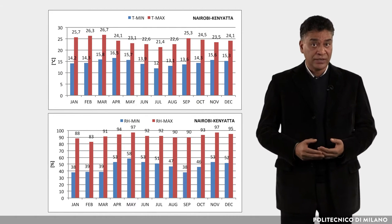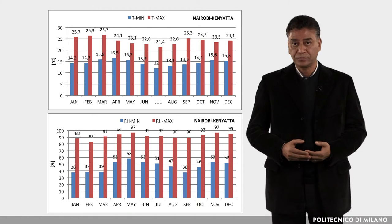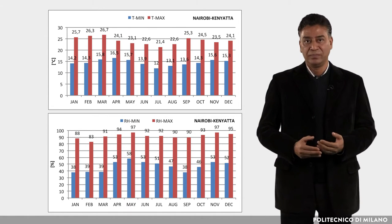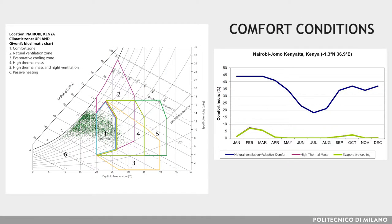The zone has fairly high humidity, similar to that of the hot-humid zone, and moderate breezes with no predominant direction. The Upland zone has a pleasant climate. Because of the high altitude, the conditions are similar to spring or autumn in a temperate climate.